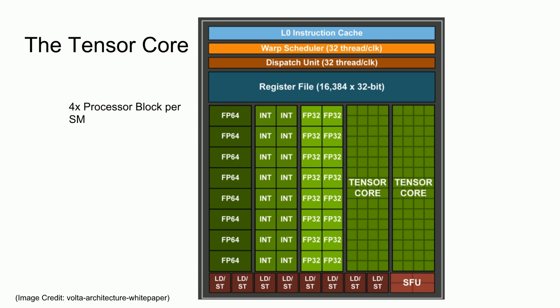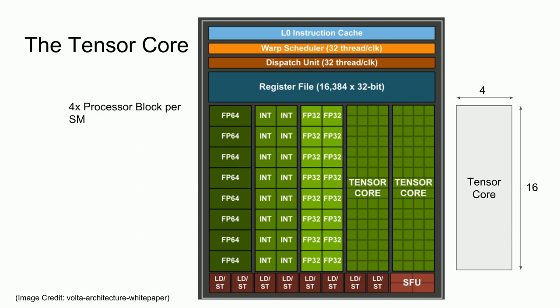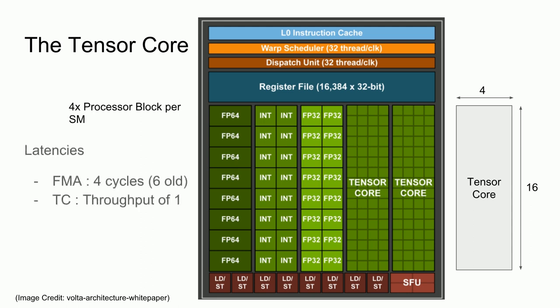Looking at the block diagram of one of the four processor blocks within a single Volta SM, we can see that there are two tensor cores, and that they are massive. Each tensor core is divided into a series of 64 blocks, spread out in a 4 by 16 grid. Most likely, the vertical axis of 16 blocks represents the 16 resultant matrix elements of the 4x4 output, and horizontally we have the 4 fused multiply-add units. According to the Volta architecture white paper, one FP32 fused multiply-add unit has a latency of 4 clock cycles, while the Pascal units had a latency of 6 cycles. One academic paper cited the white paper claiming that the tensor cores have a throughput of 1 operation per cycle, though I was unable to find that claim in the actual white paper. Either way, a throughput of 1 per cycle should be possible if done correctly.